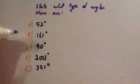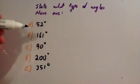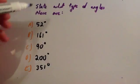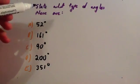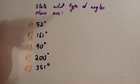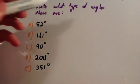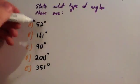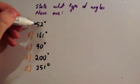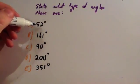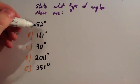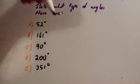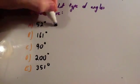Let's now look at an example. We've got five different angles here, and the question asks us to state what type of angles these are. So 52 degrees — that is bigger than 0 but less than 90, so that is an acute angle.